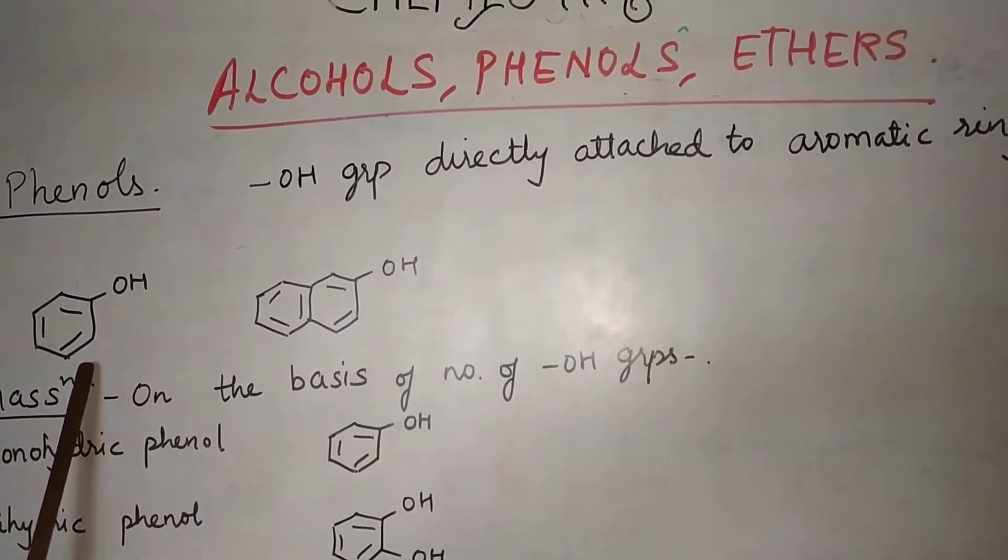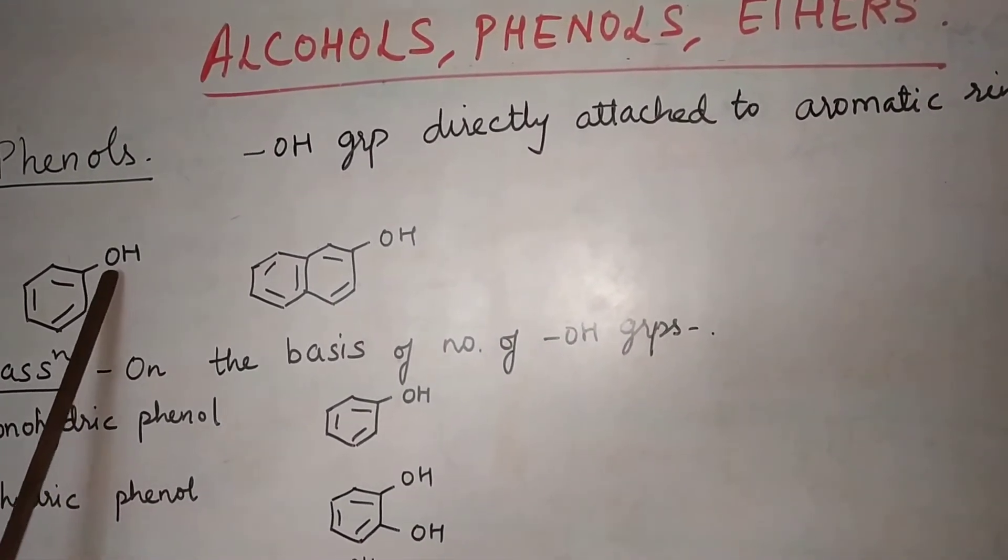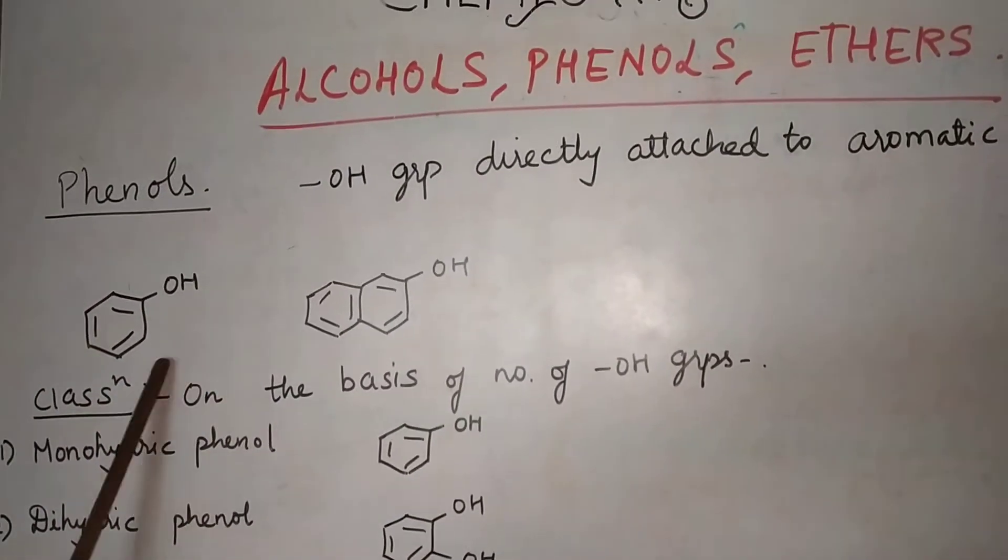This is aromatic ring. We have taken an example. Aromatic ring. Benzene ring containing OH group. This is a phenol, a phenolic compound.